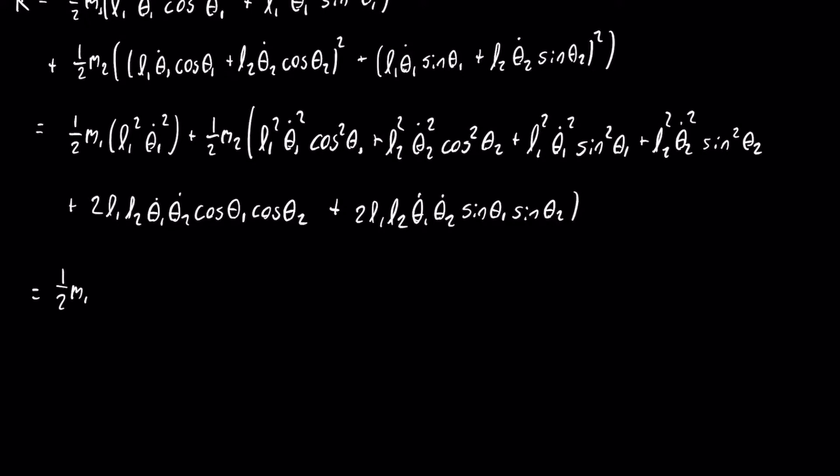In the first and third term inside the second set of parentheses, if you factor out L1 squared theta 1 dot squared, you are left with cosine squared theta 1 plus sine squared theta 1, which is equal to 1. So, that means all we're left with is L1 squared theta 1 dot squared. You can do the same thing for the second and fourth terms in that second set of parentheses, and you are left with L2 squared theta 2 dot squared.